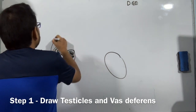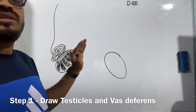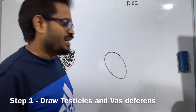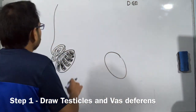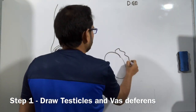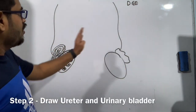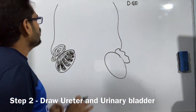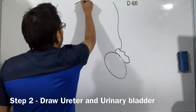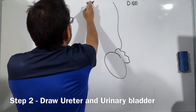From there, you can draw one of the ducts going up. As you have explained one side, you're not going to explain it on the other side — the mirror image we are supposed to draw, just the outer part. So once we have drawn these two parts, next is drawing the urinary bladder. Just make sure that it is almost in the middle of these two testicles.